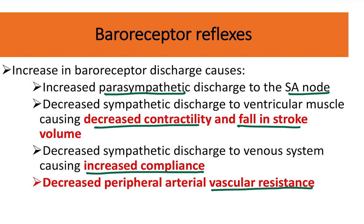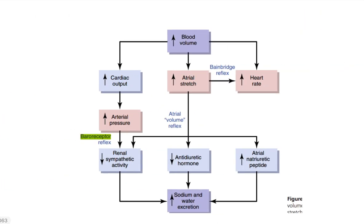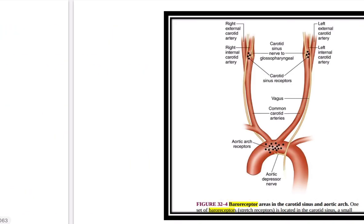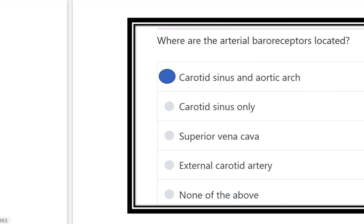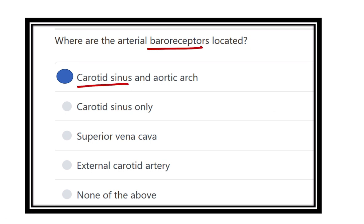Decreased peripheral arterial vascular resistance results, so overall sympathetic activity reduces and parasympathetic activity increases. This diagram shows the effect of increased blood volume: different activities are triggered that ultimately reduce blood volume and maintain normal homeostasis. The aortic receptor signal travels via the vagus nerve, and the carotid sinus signal travels via the glossopharyngeal nerve. Our answer is that the baroreceptors are located in the carotid sinus and aortic arch.